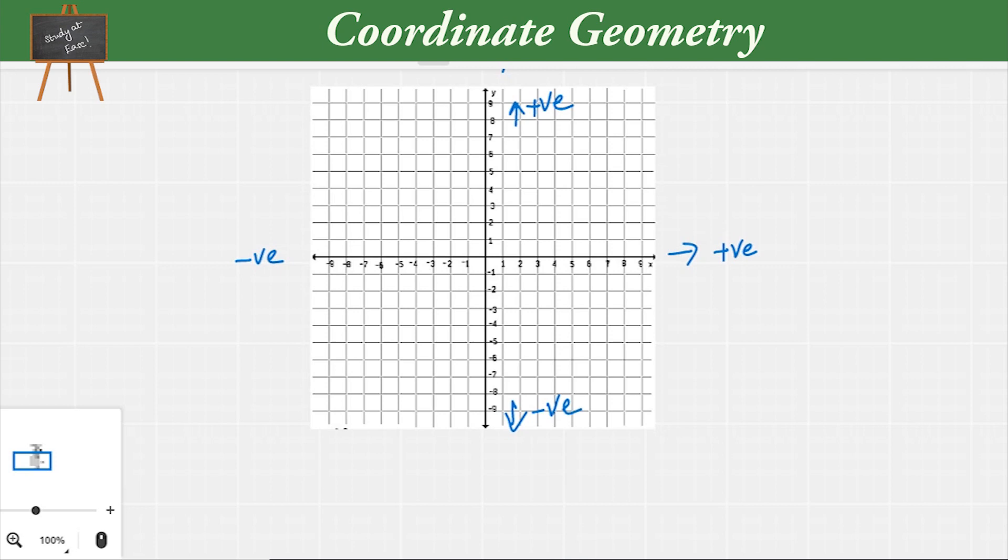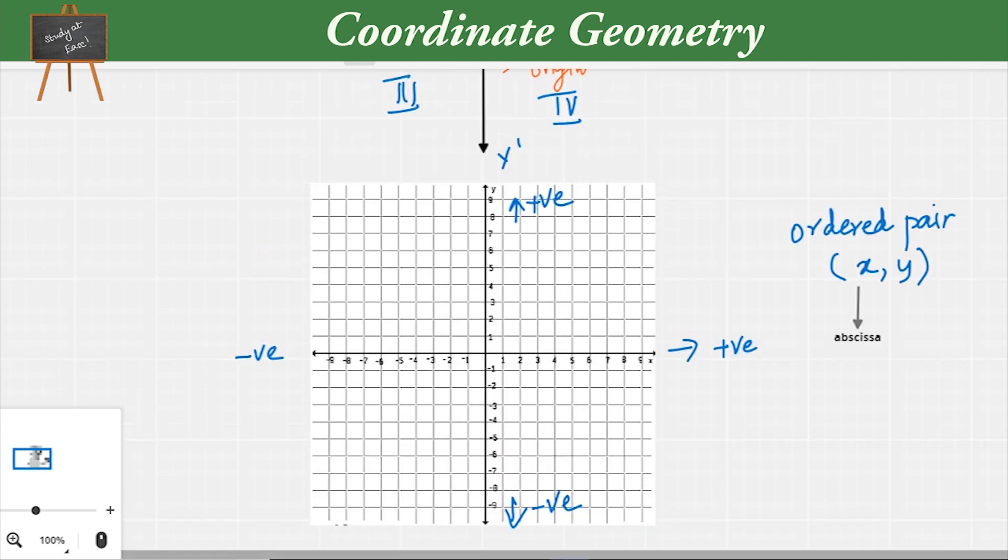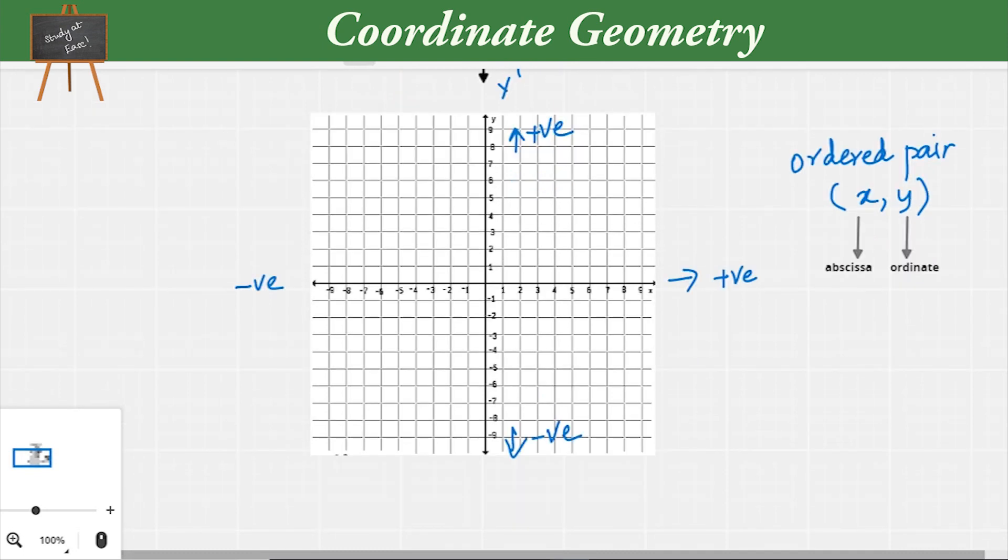Now we locate a point with respect to these coordinates. There is a new term I have to introduce to you: it's called an ordered pair. An ordered pair is represented by x comma y inside parenthesis. This x is called as the abscissa, whereas the y is called as the ordinate. This abscissa and ordinate are used to locate any point on this coordinate plane.